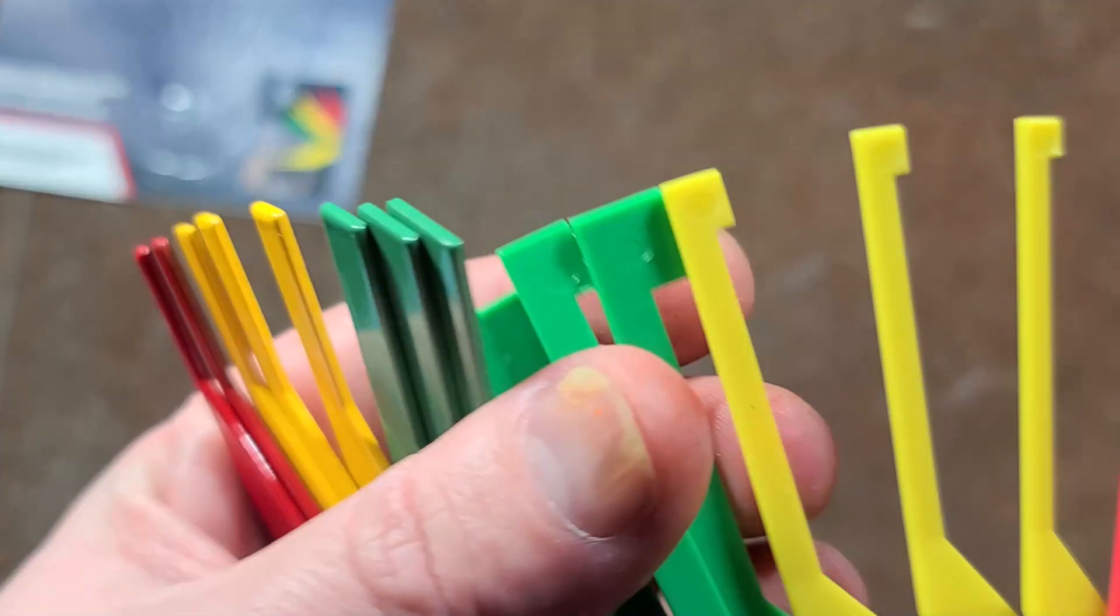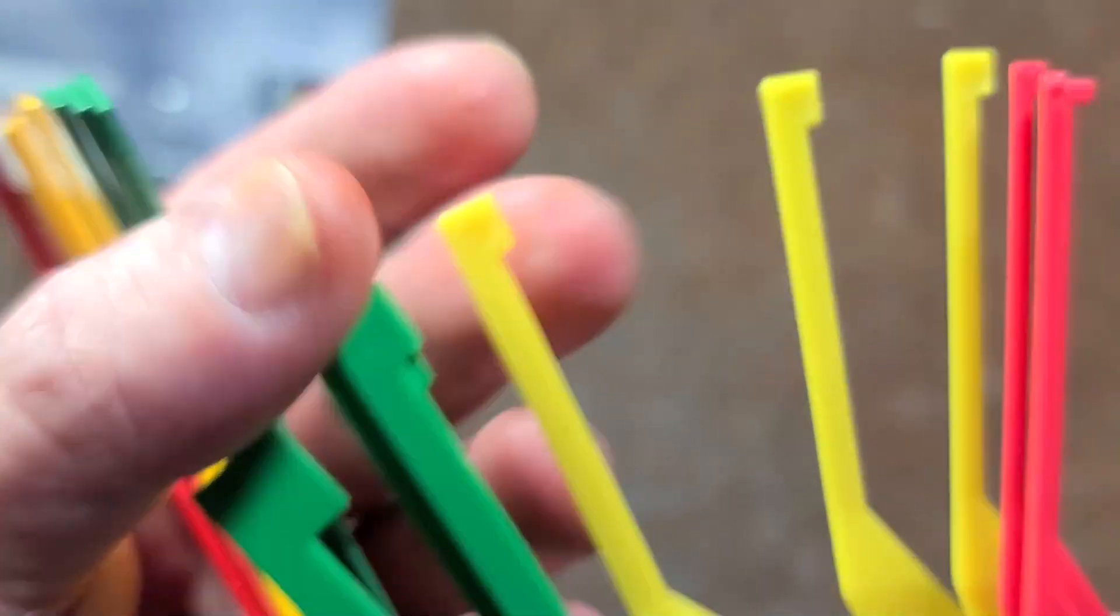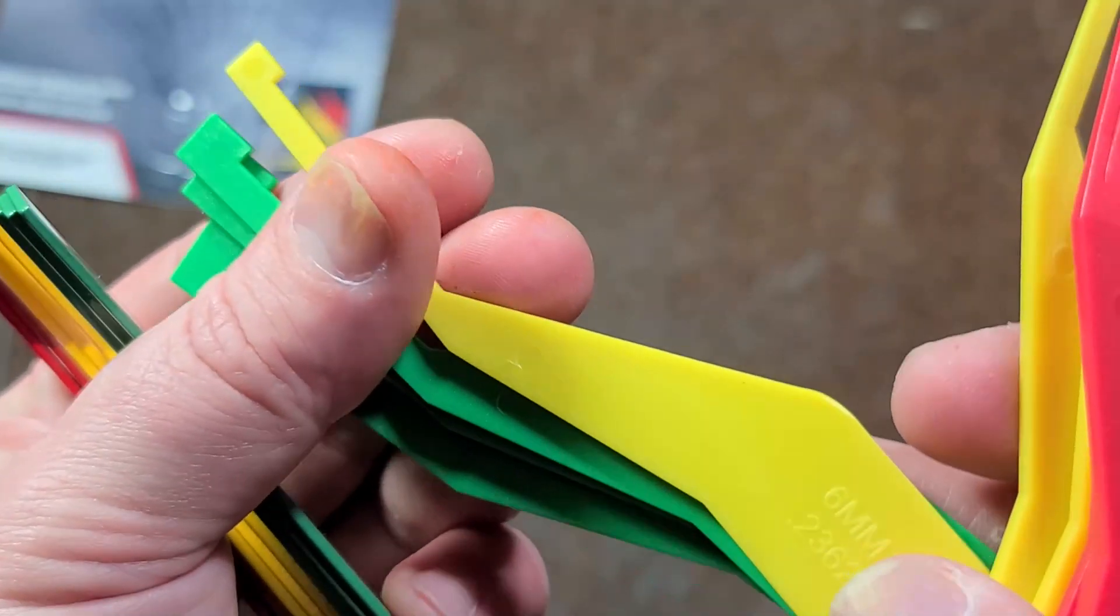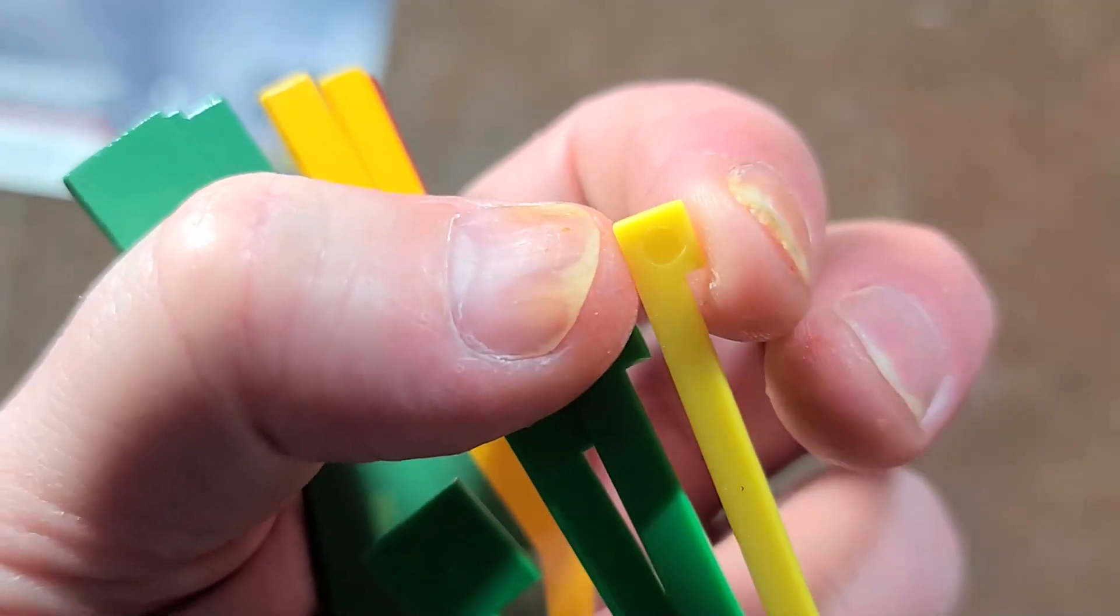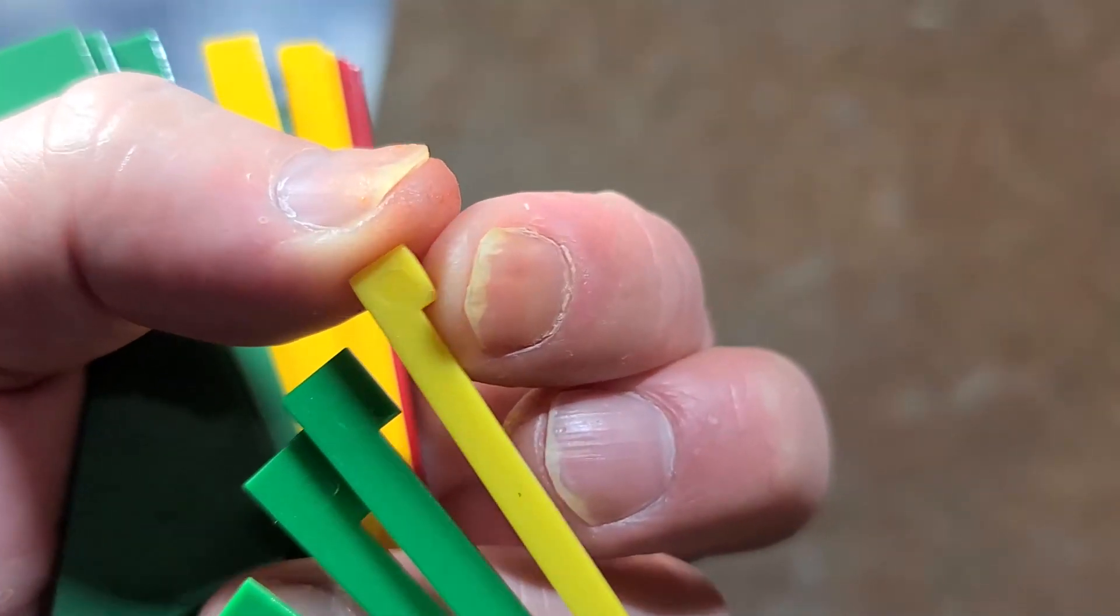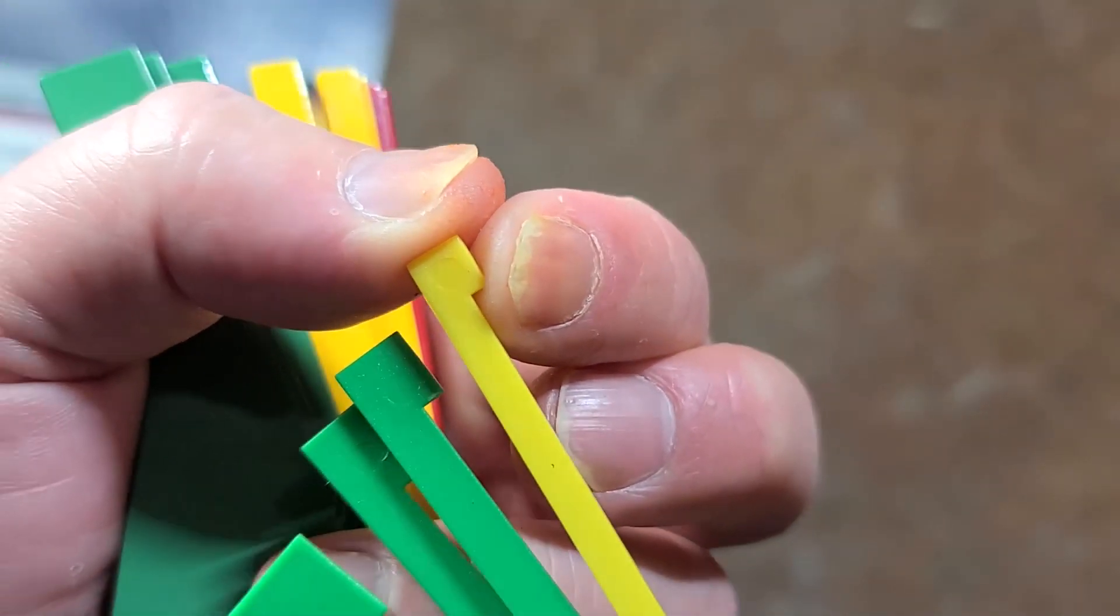What is a bigger deal is the fact that these have the ends that are squared. So for instance, on the six millimeter one here, this is six millimeters tall, and then this little edge, this little block here is six millimeters long.